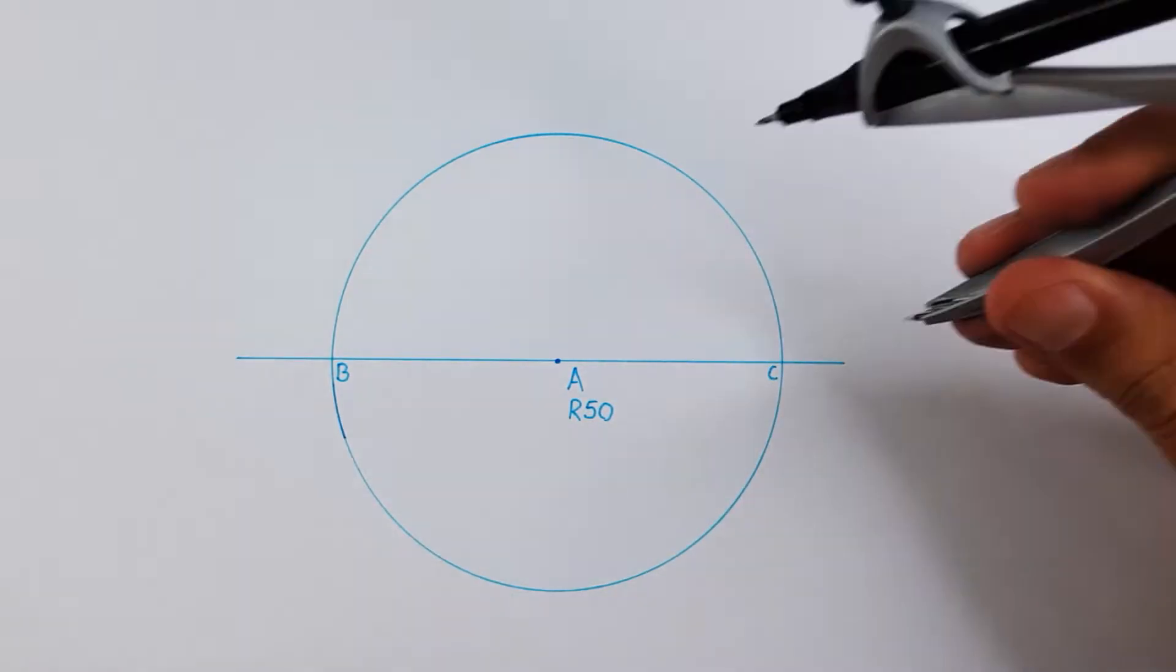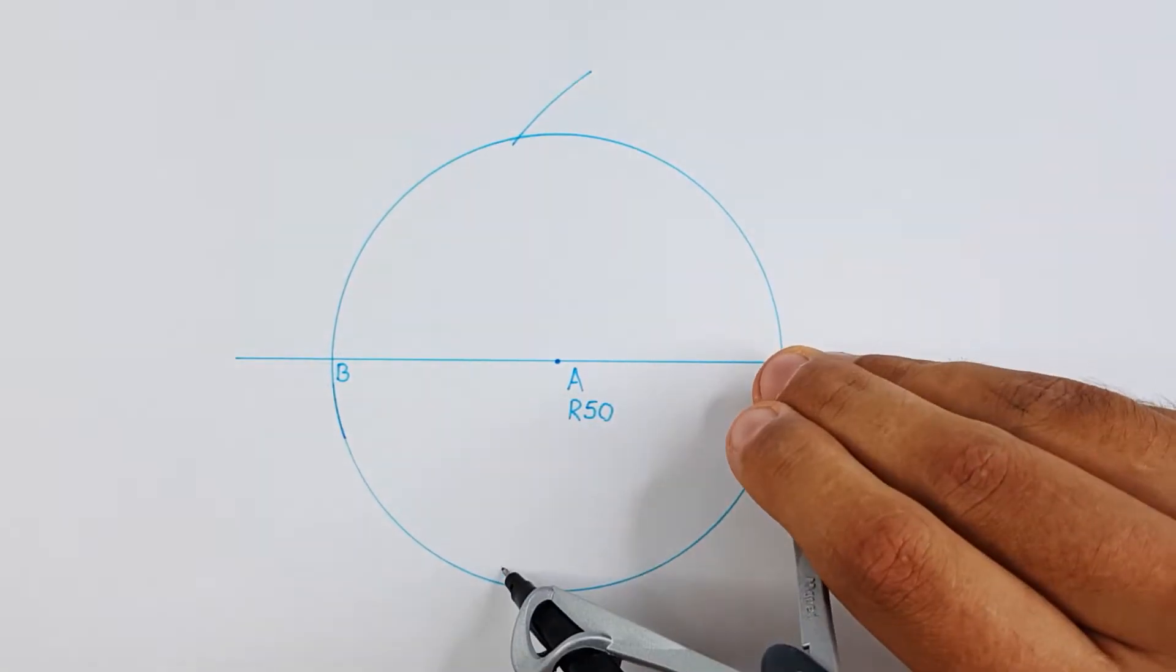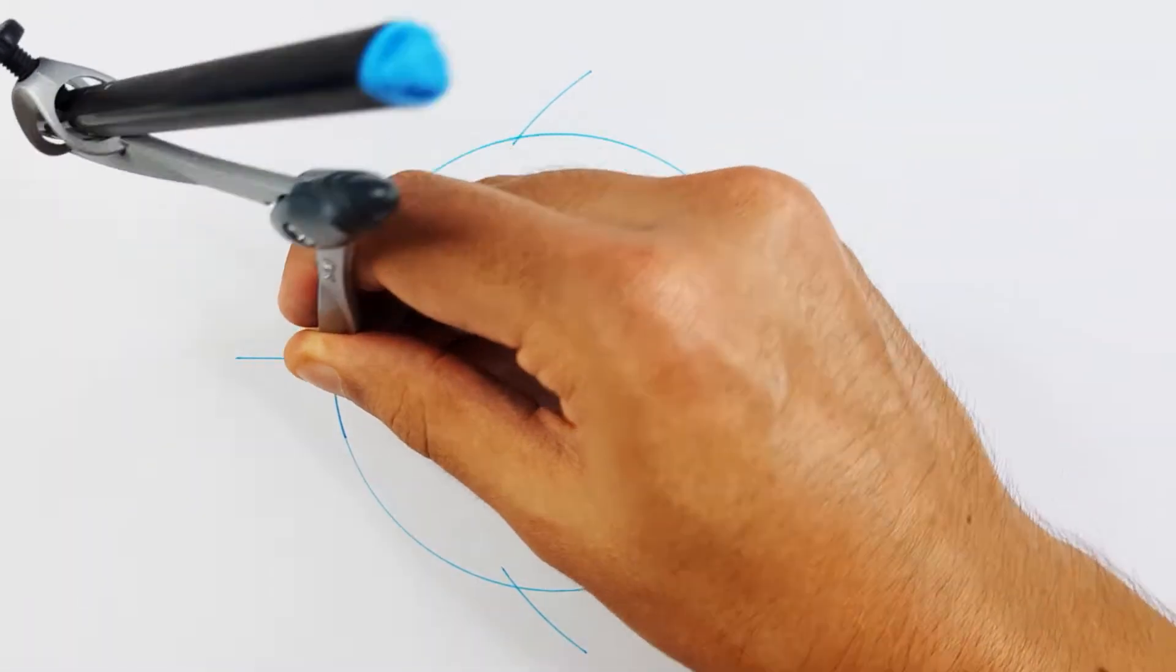You can then take your compass and apply the middle point method on line BC. This is to ensure that we have a perpendicular line on line BC.